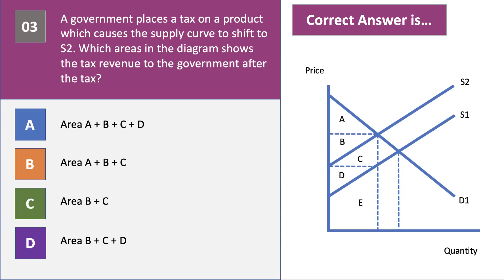The right answer to question 3 is C. The area of tax is the vertical distance between the two supply curves multiplied by the output. The output will be lower after the tax, so the area is therefore B plus C. Area A is consumer surplus after the tax.